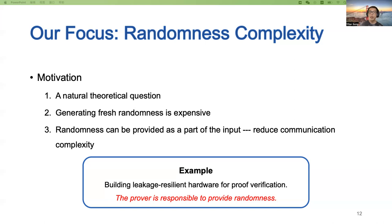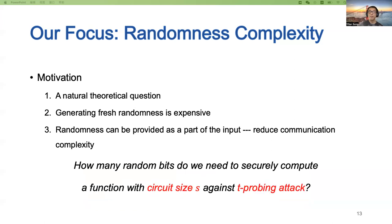For example, we may build a leakage-resilient hardware for proof verification; in this situation, the prover may be responsible for providing fresh randomness using the hardware. Therefore, in this work we consider the following question: how many random bits do we need to securely compute a function with circuit size S against a T-probing attack?